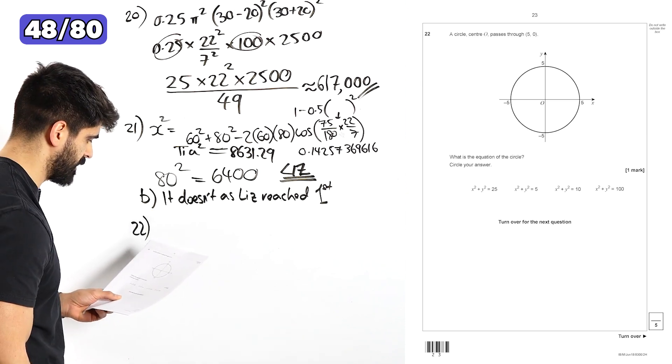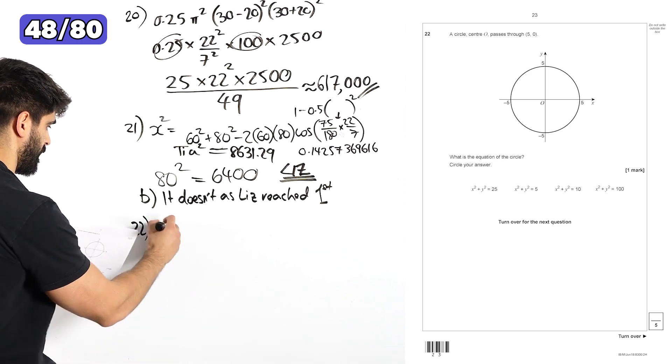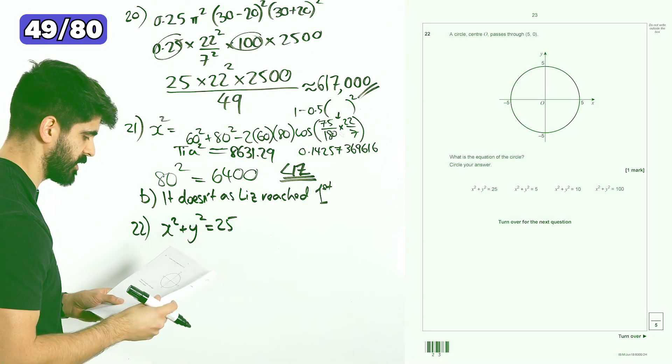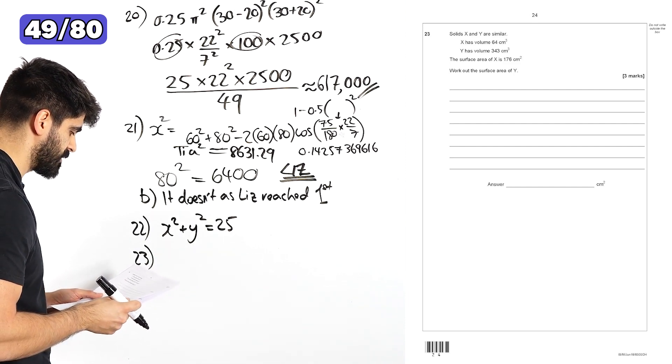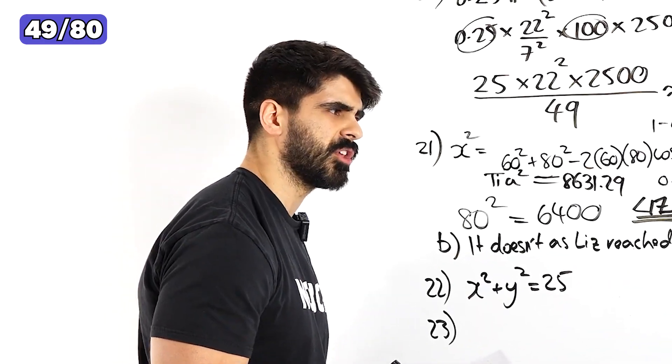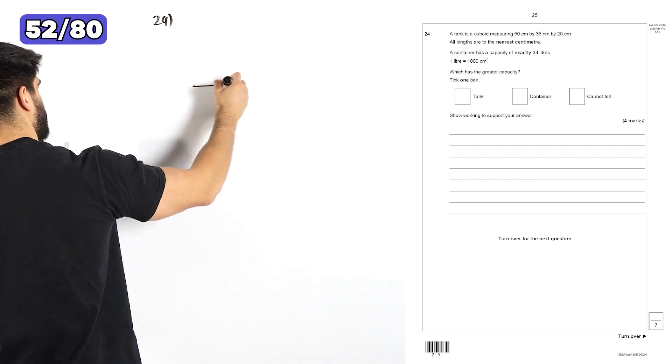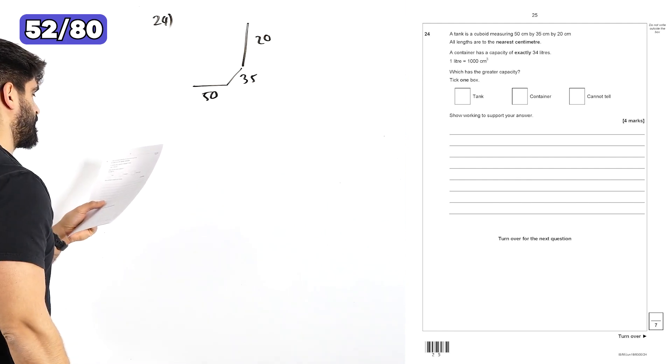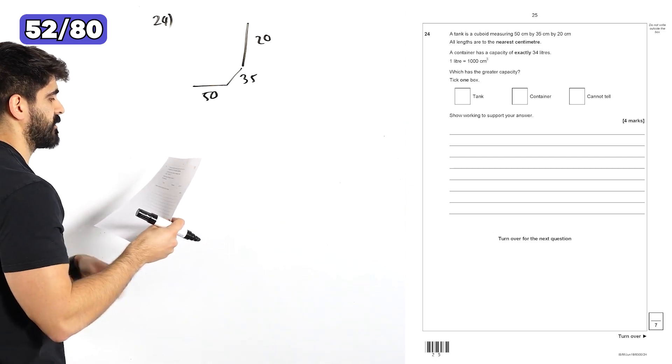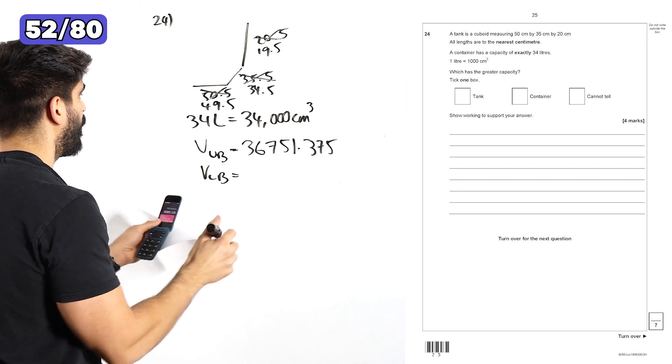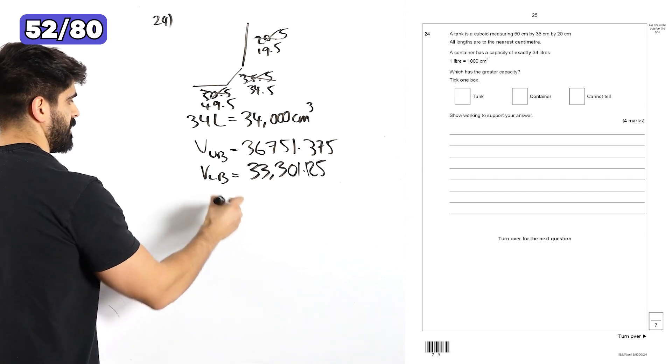Question 22. A circle center O passes through 50. What's the equation of the circle? x squared plus y squared is 25. Yeah, x squared plus y squared is r squared. Question 23. Solids x and y are similar. X has volume 64. Y has volume 343, which I think is 7 cubed. Question 24. A tank is a cuboid measuring 50, 35, 20. All lengths are to the nearest centimeter. A container has capacity of 34 liters. One liter is a thousand centimeters cubed. Which has a greater capacity? 33, 31.25. So the answer here is cannot tell.